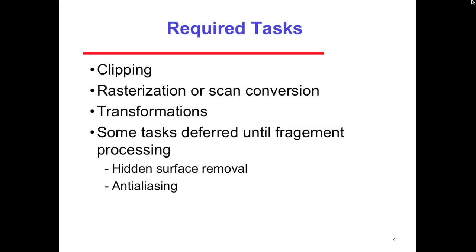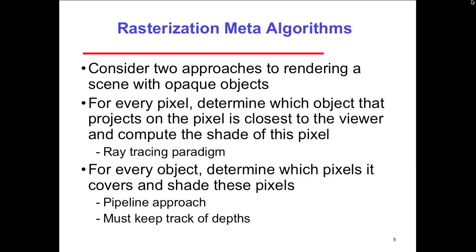The required tasks to put something on the view include clipping, rasterization or scan conversion, and transformations. Some tasks are deferred until fragment processing: hidden surface removal and anti-aliasing. In terms of rasterization meta-algorithms, we have two approaches to rendering a scene with opaque objects. For every pixel, we can determine which object projects onto that pixel and is closest to the viewer and compute the shade — this is part of ray tracing.